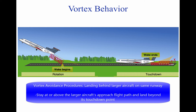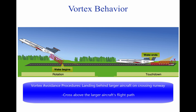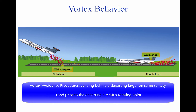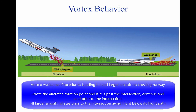Vortex Avoidance Procedures — Landing scenarios. When landing behind a larger aircraft on the same runway, stay at or above the larger aircraft's approach flight path and land beyond its touchdown point. When landing behind a larger aircraft on a parallel runway closer than 2,500 feet, consider the possibility of drift and stay at or above the larger aircraft's final approach flight path. When landing behind a larger aircraft on a crossing runway, cross above the larger aircraft's flight path. When landing behind a departing aircraft on the same runway, land prior to the departing aircraft's rotation point. If the larger aircraft rotates prior to the intersection, avoid flight below its flight path and abandon the approach unless a landing is ensured well before the intersection.